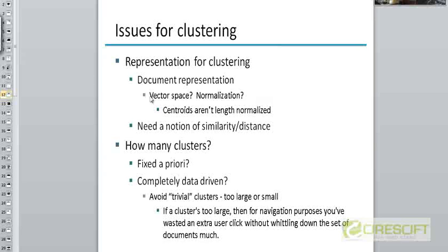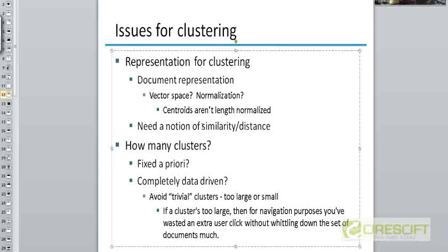Assuming that we have documents represented as vectors of TF-IDF weights, we need some notion of similarity or distance between documents. We are going to continue with the idea of cosine similarity. The cosine similarity lies between 0 and 1, so the distance between two documents can be defined as 1 minus the similarity. Even if we are talking about distance, you can think of it as just the inverse of similarity.